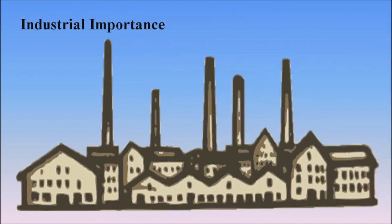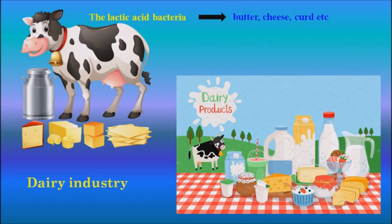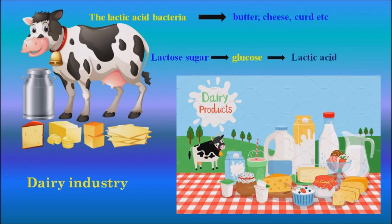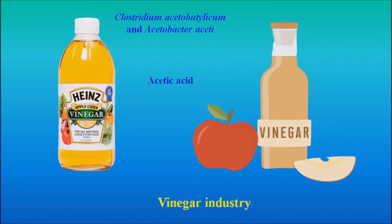Now we are going to discuss the industrial importance of microorganisms. From ancient times, men have used microorganisms in the preparation of food, drinks, etc. In the dairy industry, lactic acid bacteria are used in the preparation of butter, cheese, curd, etc. Curd is prepared from milk by bacteria in two stages: they convert lactose sugar into glucose, and glucose into lactic acid, which sours the milk and coagulates the milk protein, forming the curd. Some bacteria used in the dairy industry are Lactobacillus plantarum, Lactobacillus acidophilus and Lactobacillus bulgaricus. In the vinegar industry, Clostridium acidobutylicum and Acetobacter are used in the conversion of alcohol to acetic acid, i.e., vinegar. This is done in wooden baths and takes several weeks to complete.